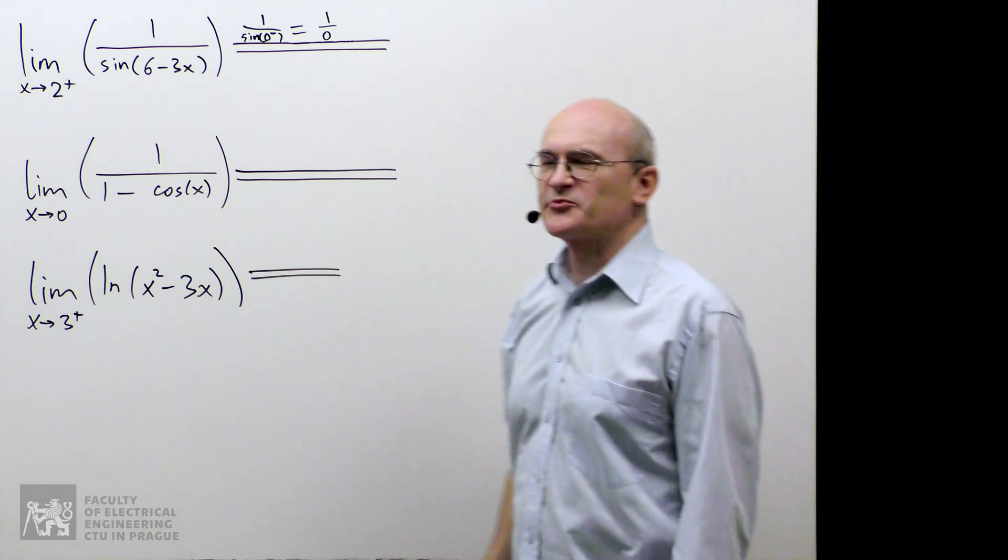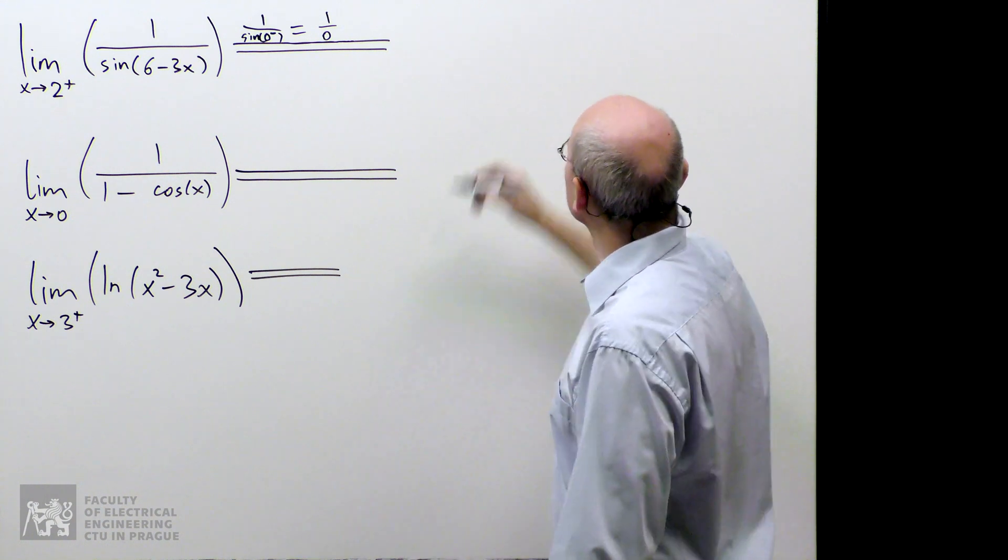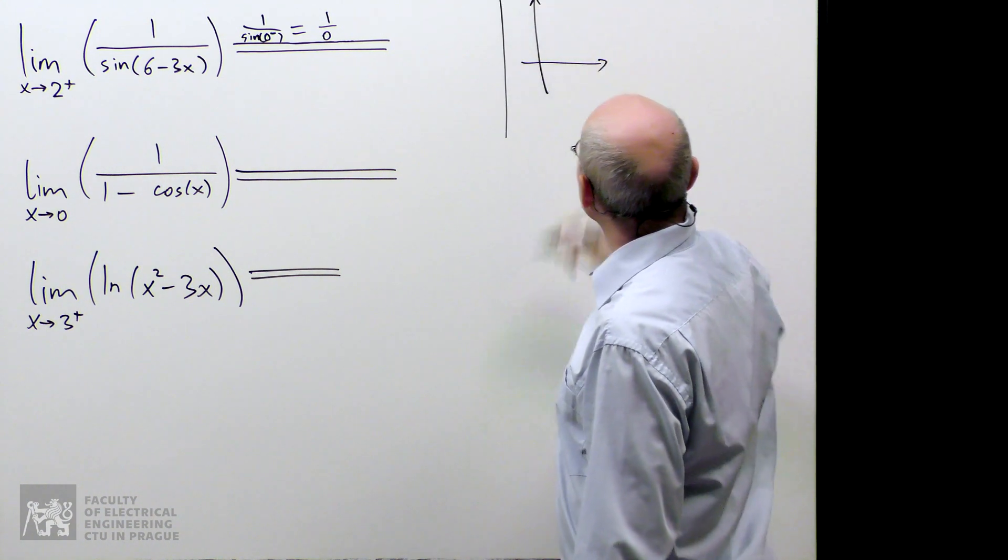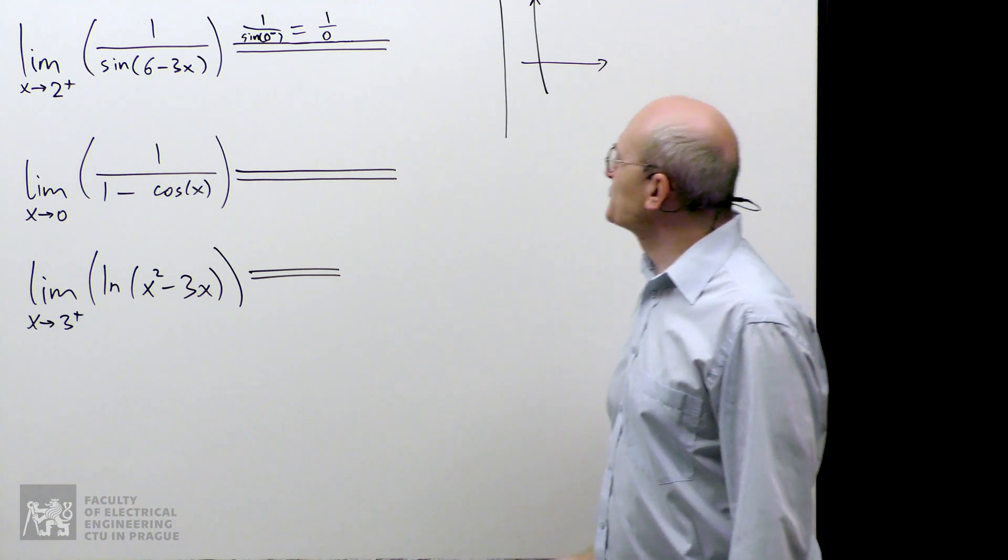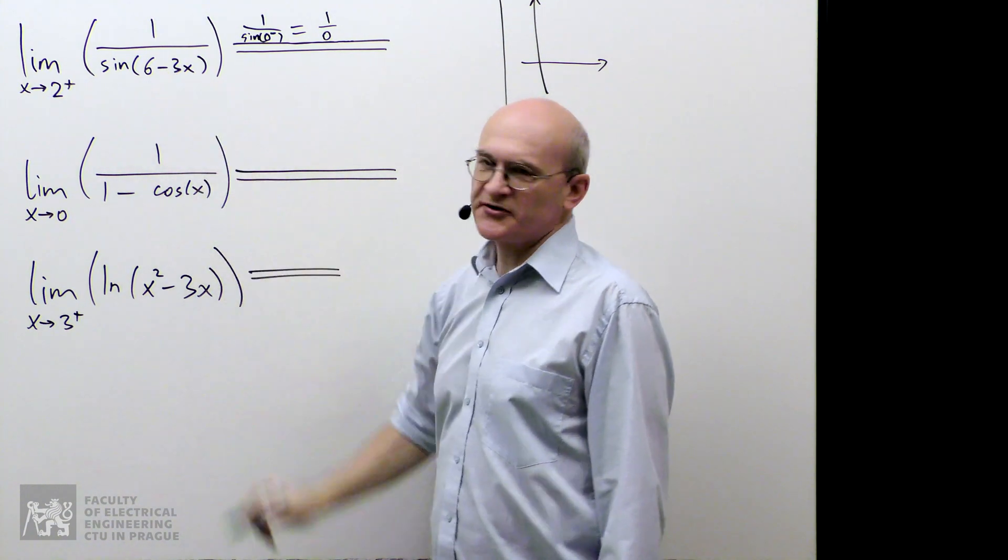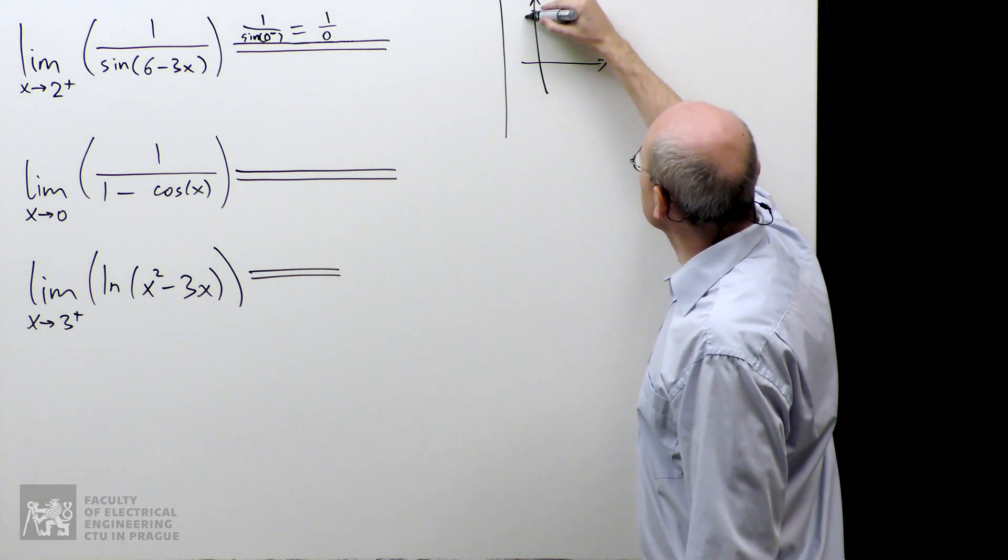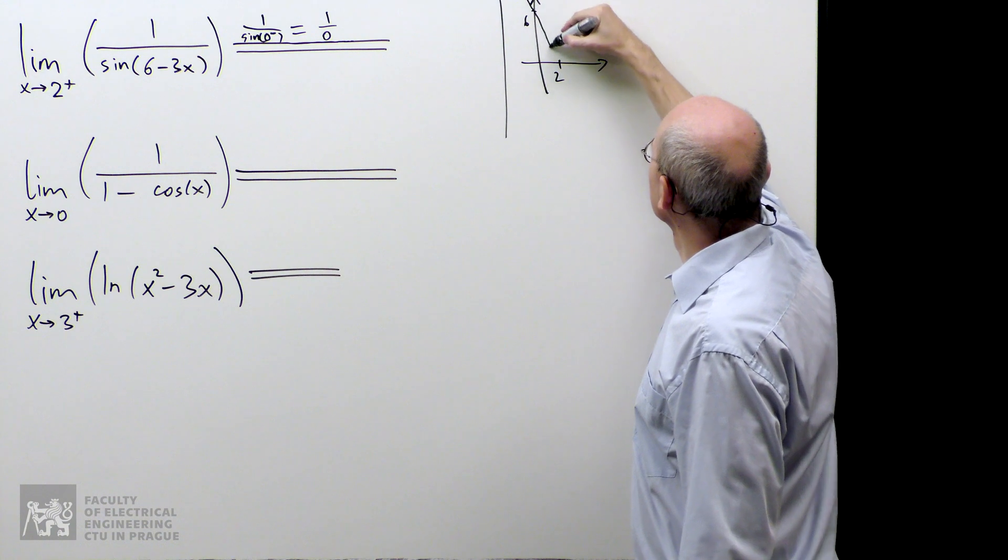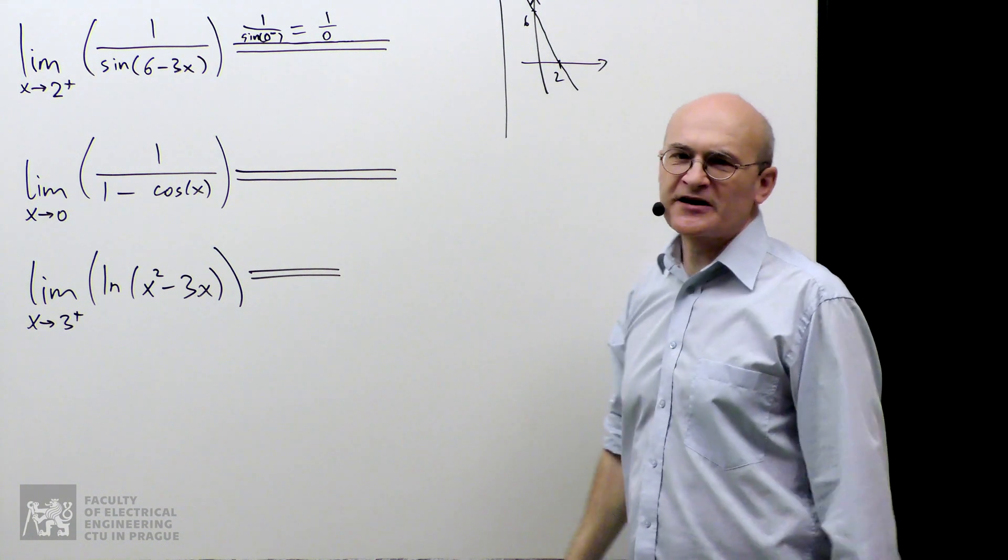Let's have a look at a second approach. You can call it a graphical approach. I have a fairly good idea about the shape of the function 6 minus 3x. That's just a straight line. It goes through 6 over here, and through 2 over here.